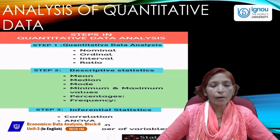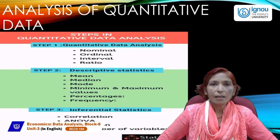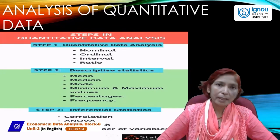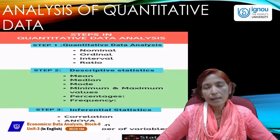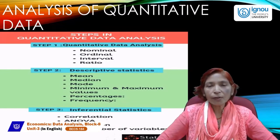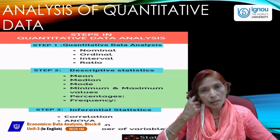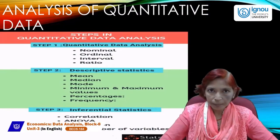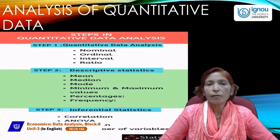In inferential statistics we include statistical tools like correlation, ANOVA (analysis of variance), and regression. Correlation explains the relationship between two variables. If we have two variables like x and y, correlation tells us what type of relationship exists between them.